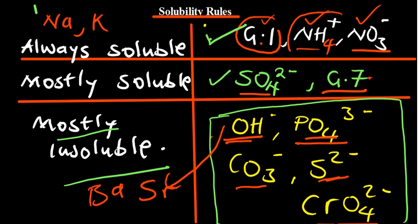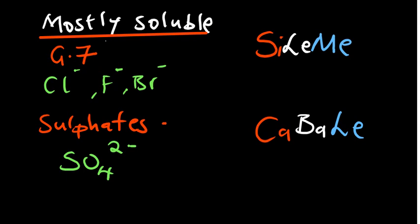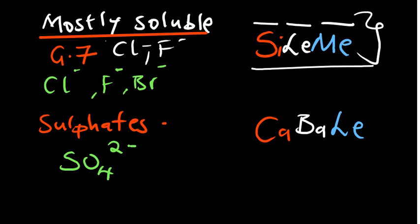Now that we know the ones that are mostly insoluble with their exceptions, let us find out the exceptions to the ones that are mostly soluble. So with the ones that are mostly soluble, we said group 7 elements, which include chlorine, bromine, fluorine, and other halogens. These are going to be mostly soluble. Except — a few exceptions — remember the word 'Sleme': that is silver, lead, and mercury. These are the exceptions to the group 7 elements. Then for the sulfates, which are also mostly soluble, the only exceptions are 'CaBaRed' sulfates — that is calcium, barium, and lead. These are the exceptions to the ones that are mostly soluble.